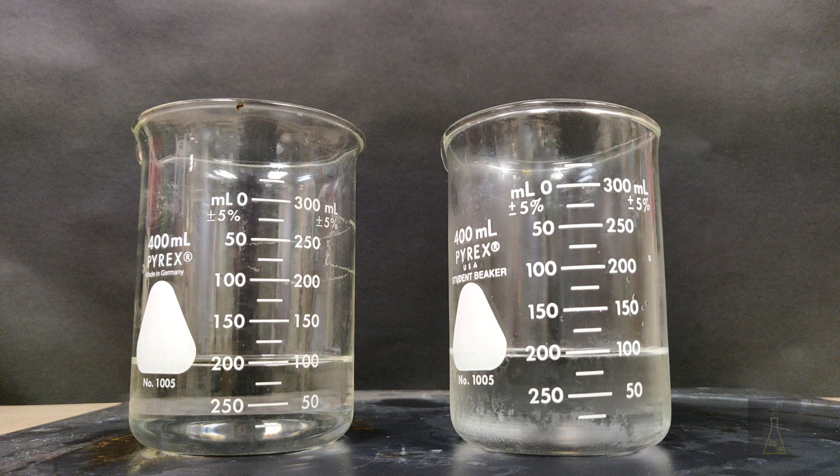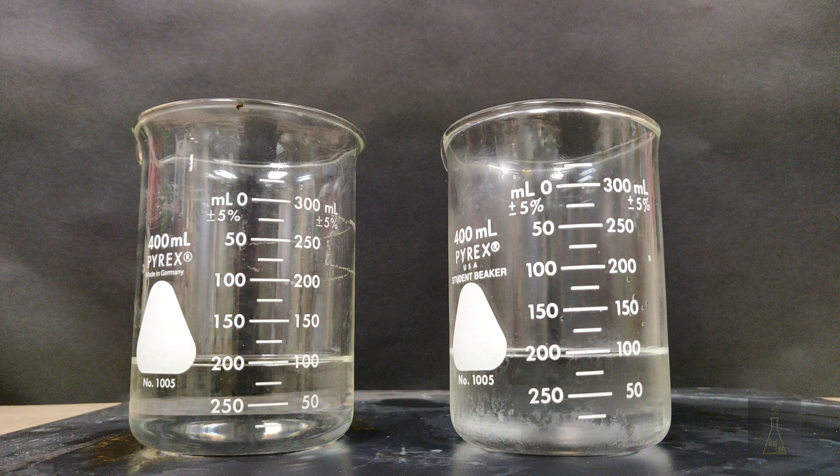We don't necessarily have to answer that question. Instead, we can pick an easier point to measure. For example, what I have here is two beakers. They're clearly labeled the same from zero milliliters all the way up to 300. That's a volume measurement. Volume, of course, is the measurement of the amount of space that matter takes up.